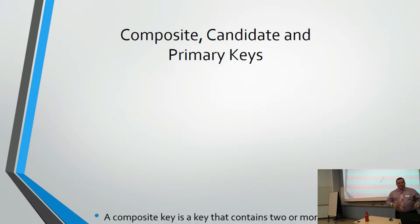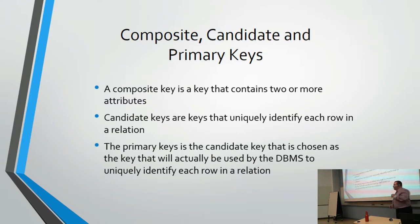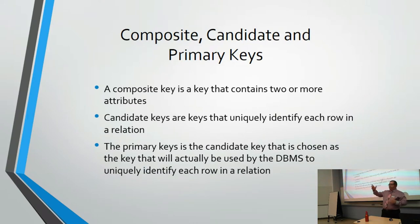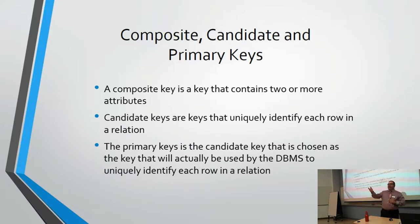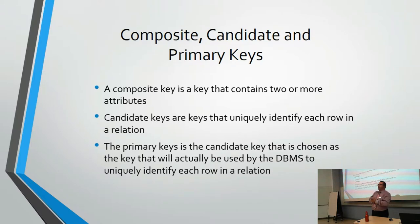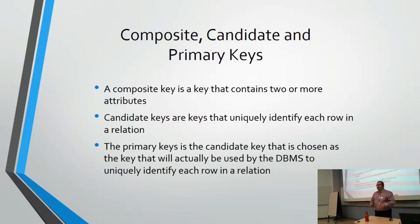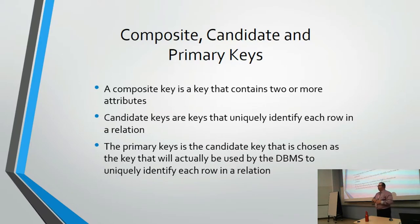Composite, candidate, and primary keys. A composite key contains two or more values or attributes. Candidate keys are keys that uniquely identify each row in a relation. The primary key — also called a prime key depending on your background — is the candidate key that wins. It's chosen to be the key that will uniquely identify the row of data and is actually used by the database server.